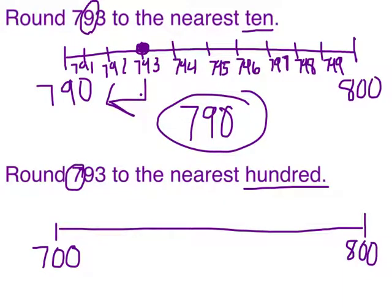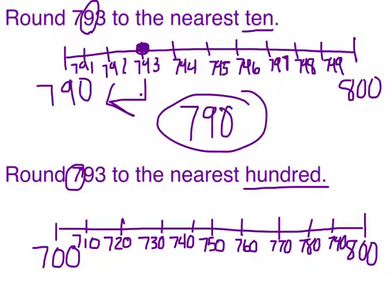This time, since I'm looking for the nearest hundred, I'm going to count by tens. I've filled in my number line. I know 793 comes past 790 on my number line. I can see that it's past the midpoint of 750, and it's much closer to 800. When I round 793 to the nearest hundred, I get 800.